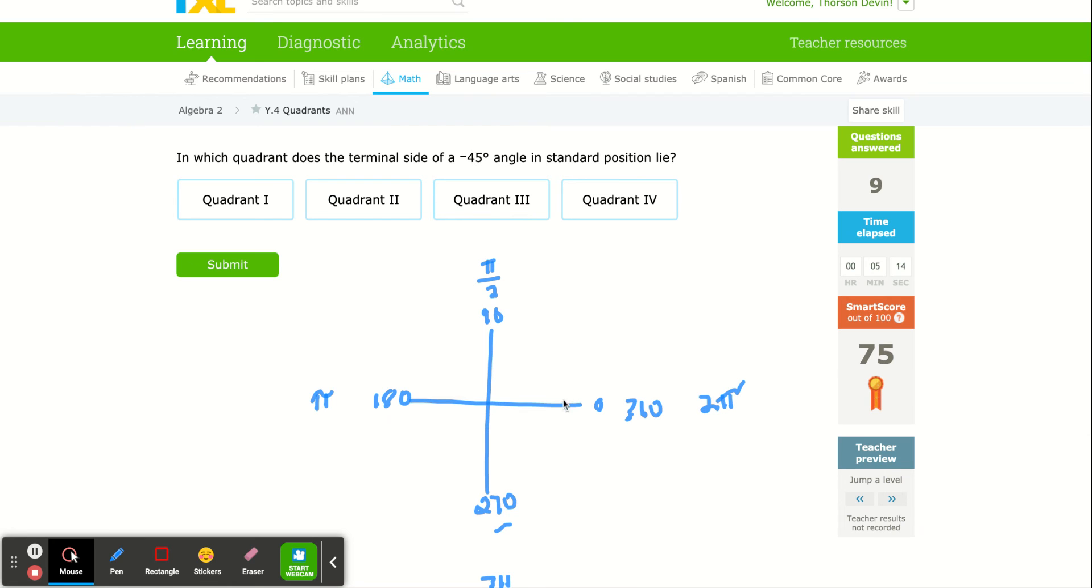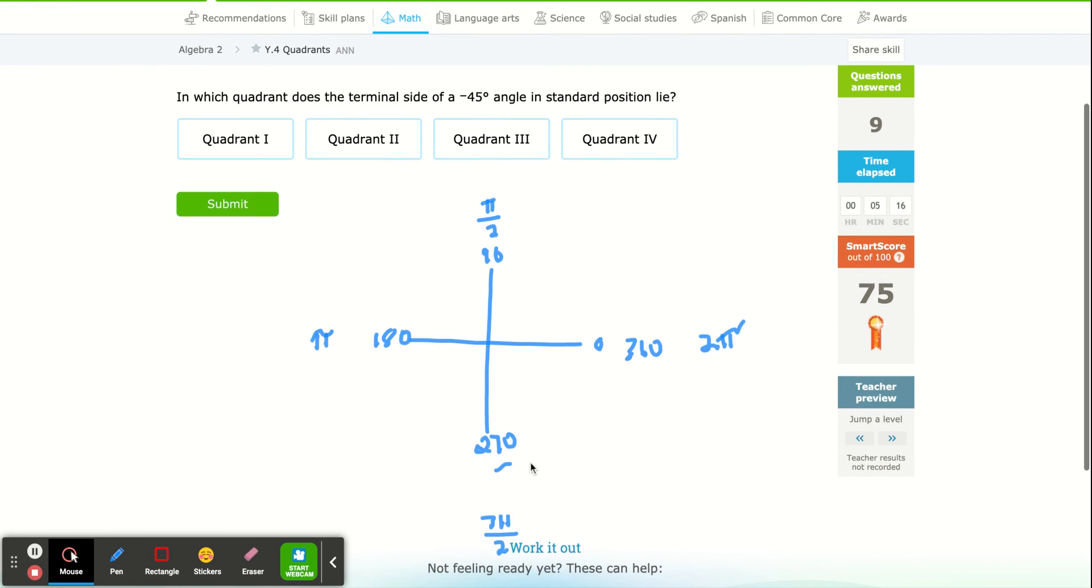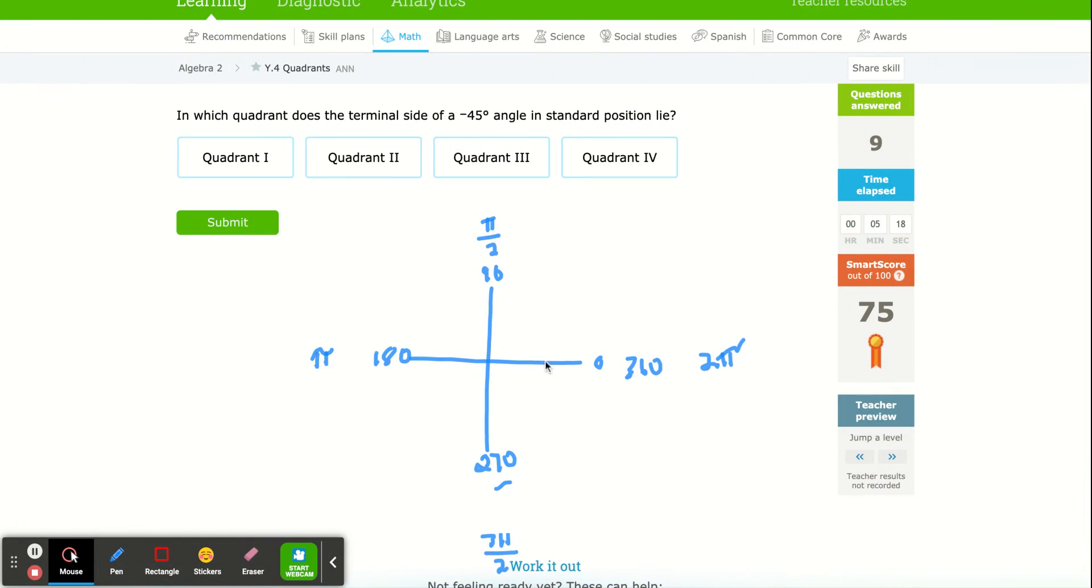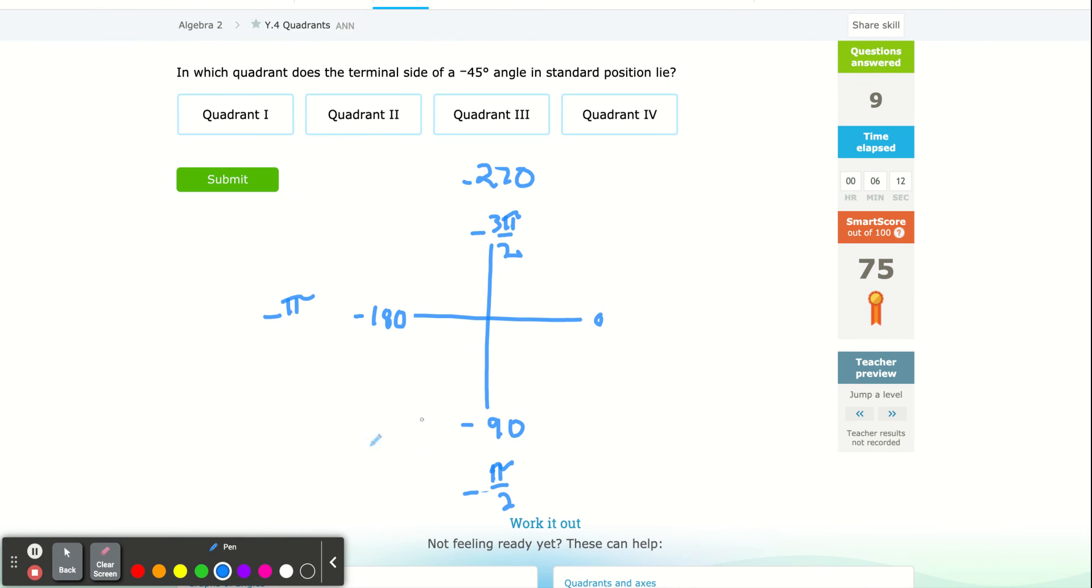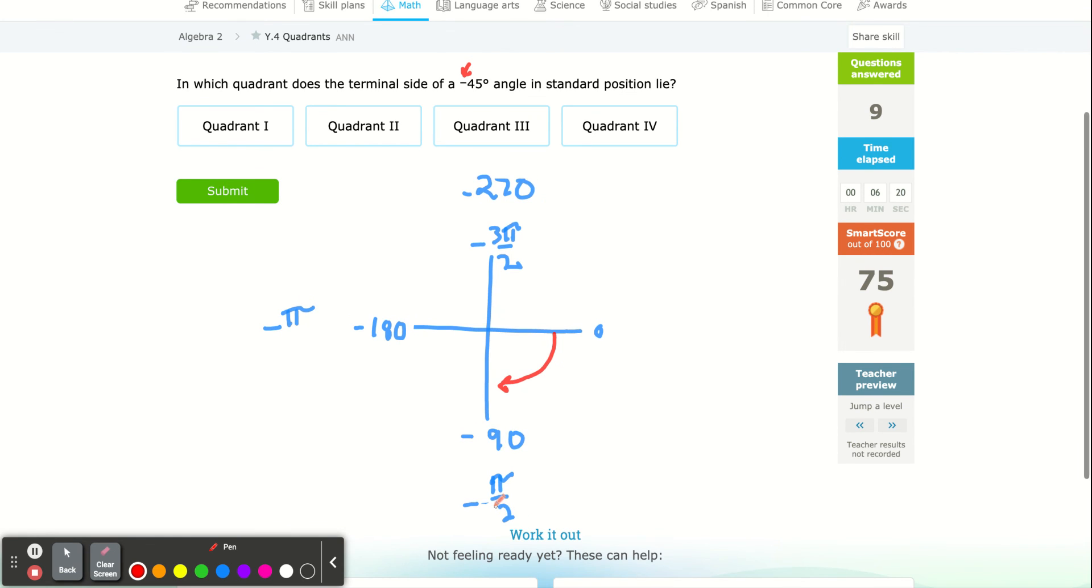Negative angles mean we're going backwards. So if you think backwards, here's 0. This is negative 90 degrees or negative π/2 radians. This would be negative π or negative 180 degrees. When you get to here, continuing in this clockwise direction, this would be negative 3π/2 or negative 270 degrees.